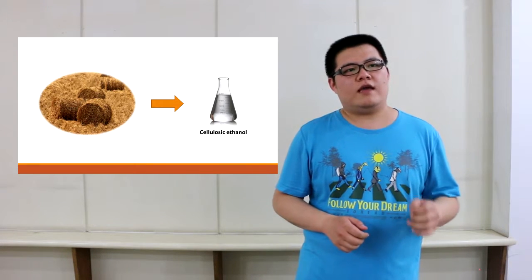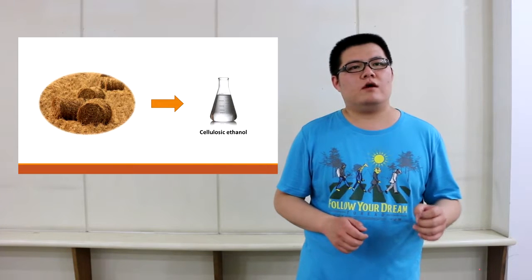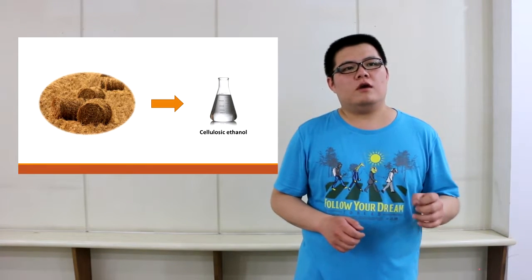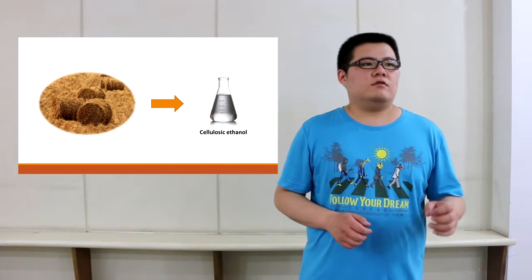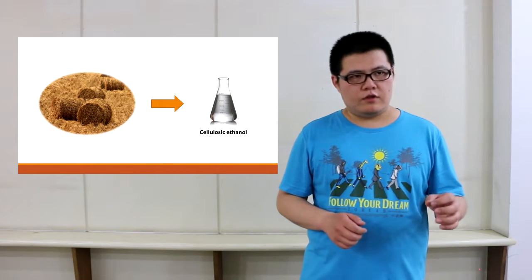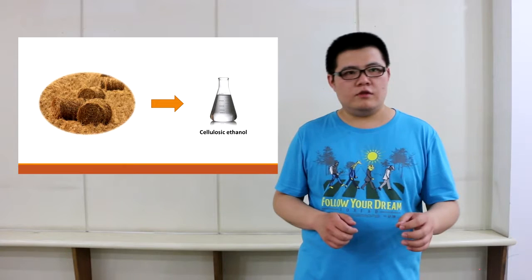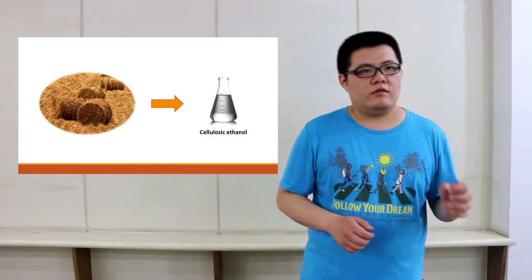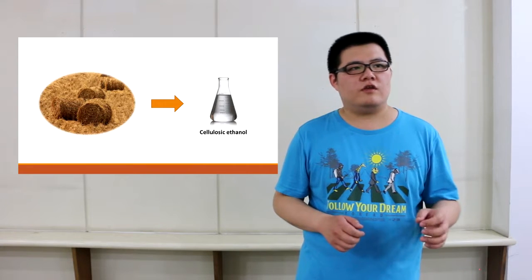We explored the mechanism of pretreatment through multi-scale structure and chemical characterizations. On macro-scale, we tested the production of sugar and byproducts, the change of components, cellulose absorption capacity, and enzymatic hydrolysis efficiency after pretreatment.